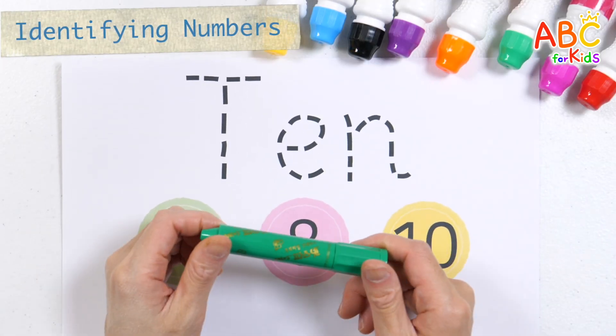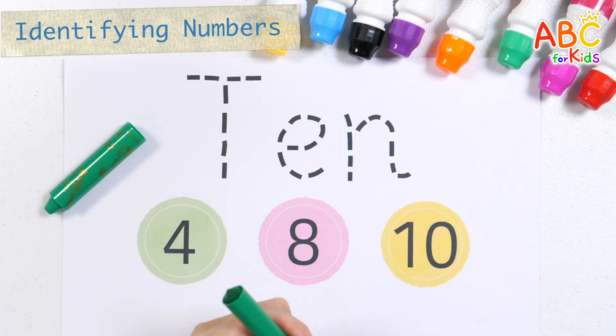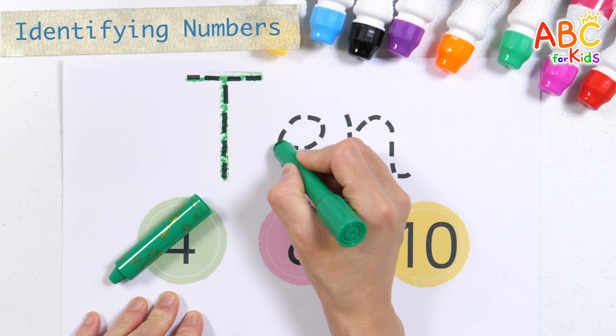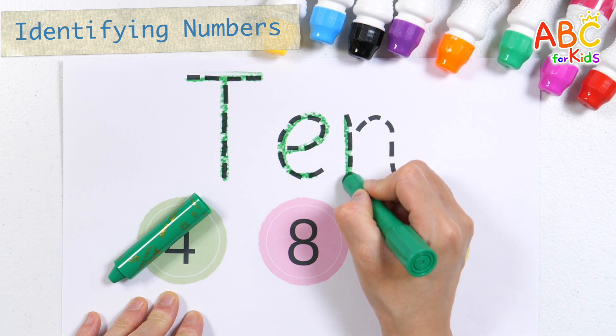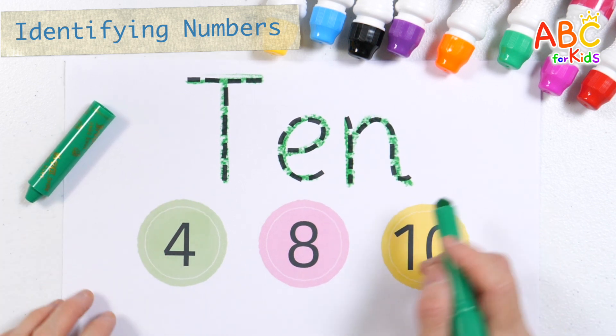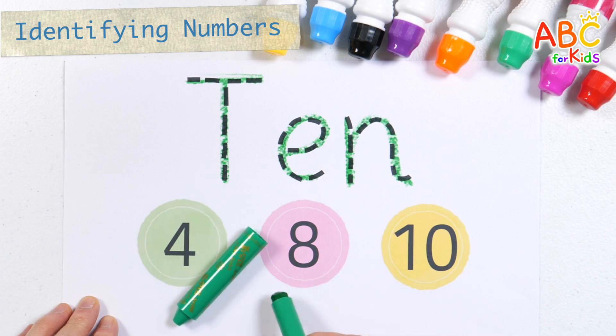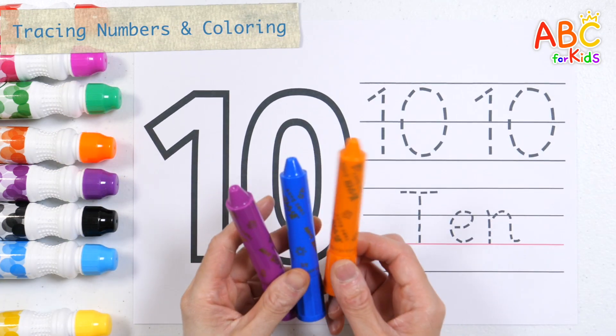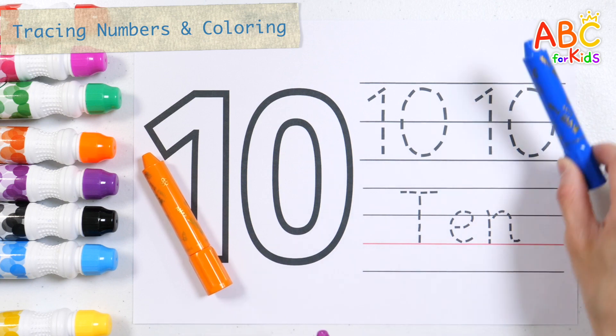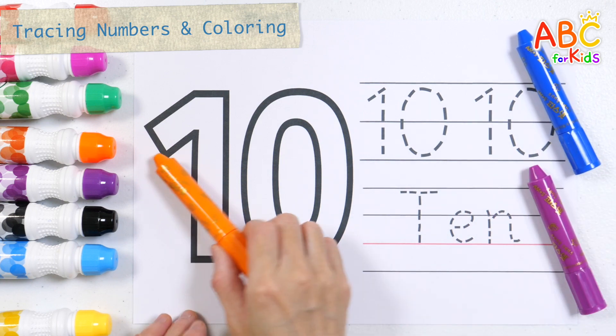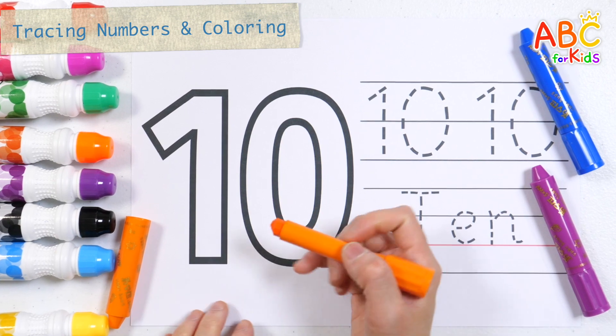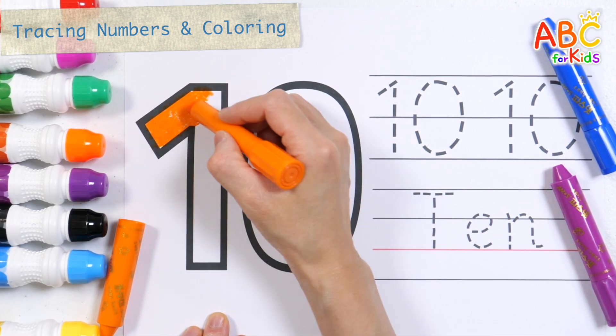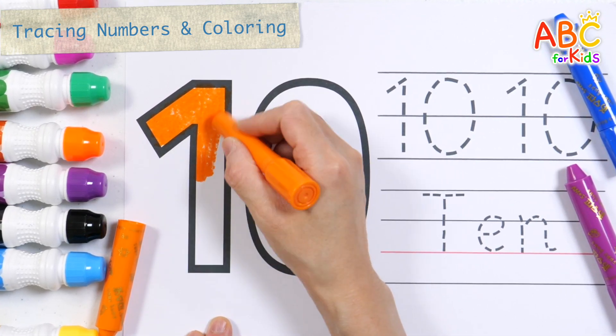Let's write a letter, find the right number, and circle it. 1, 2, 3, 4, 5, 6, 7, 8, 9.